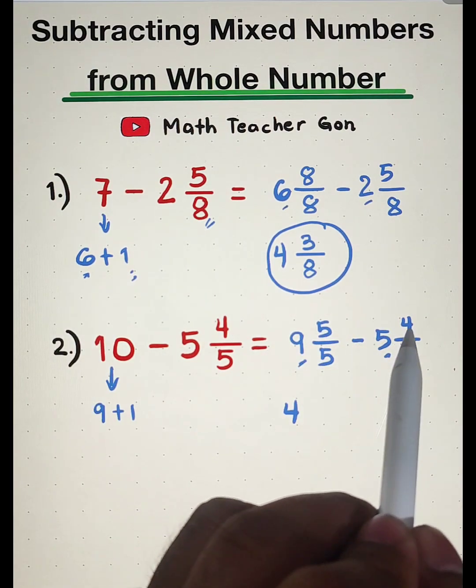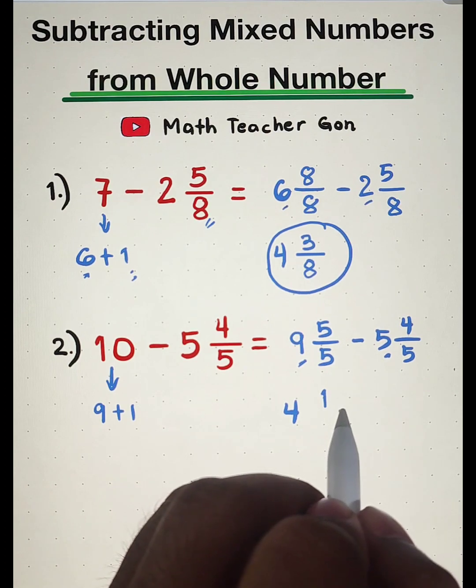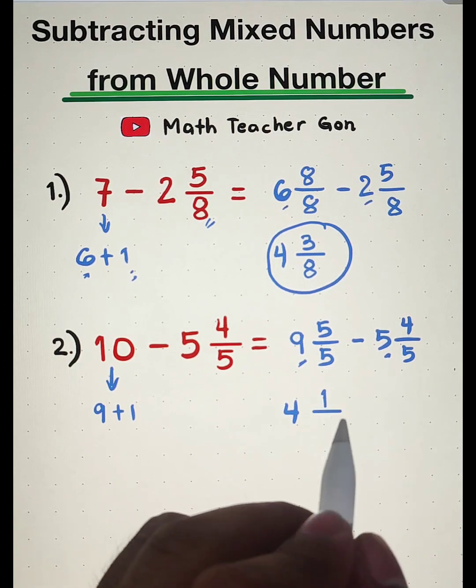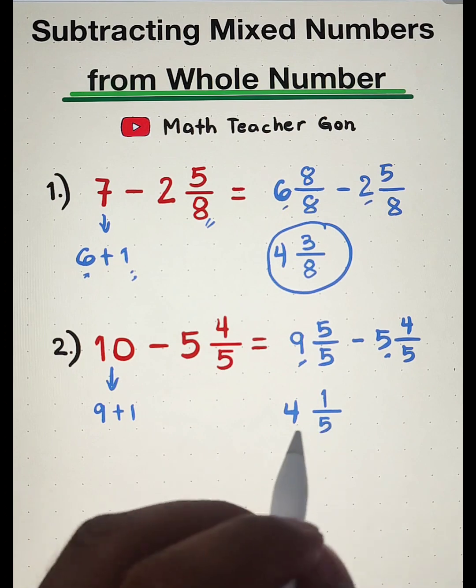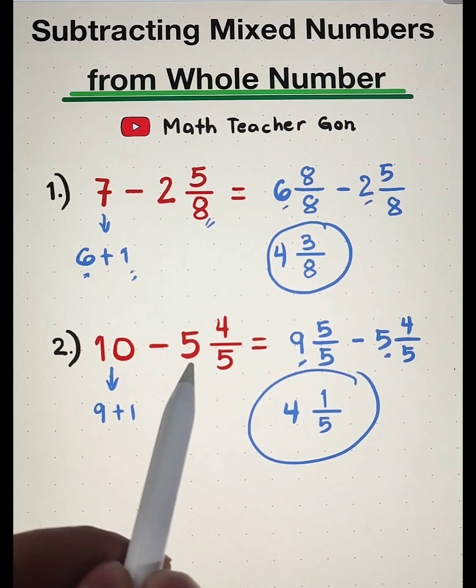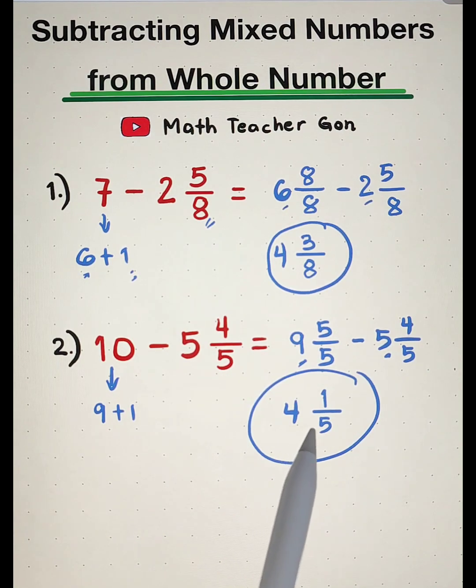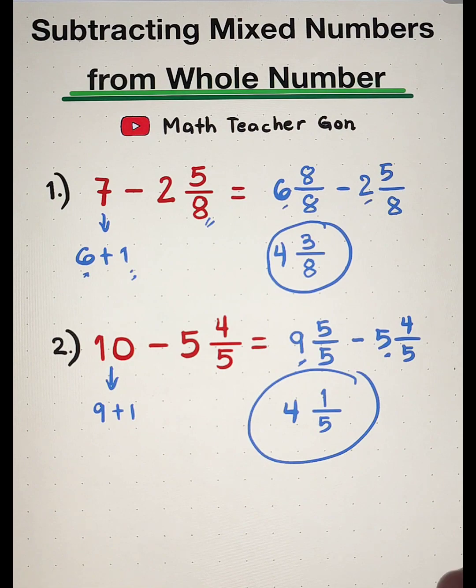subtract the two, 5 minus 4, that is equal to 1 over, copy your common denominator 5. And as you can see, the correct answer in subtracting 10 and 5 and 4 over 5 is simply 4 and 1 over 5.